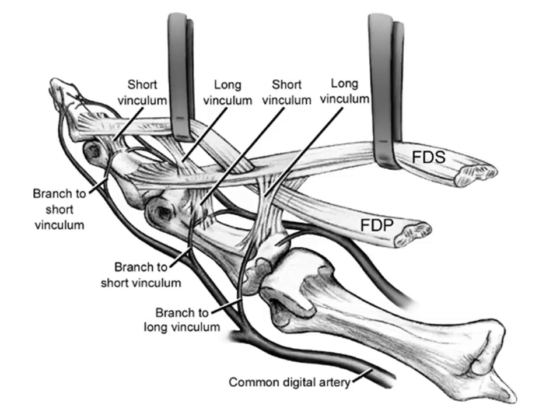Here we can clearly see the blood supply to the tendon through what is known as the long vinculum and the short vinculum. The long vinculum is more proximal, and in the FDS you can see it at the base of the proximal phalanx. Along these vincula, branches from the digital arteries enter the tendon dorsally to provide a segmental blood supply. Though the flexor tendons are relatively avascular, they do have this dorsal blood supply coming from vessels along the free edge of the vincula, which act as the mesentery through which blood supply enters the flexor tendon.